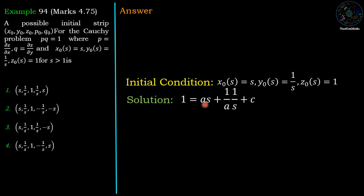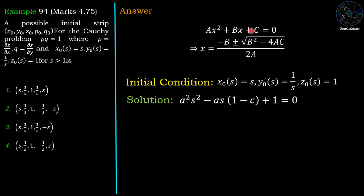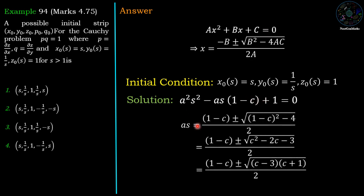To find the value of a, take c to the other side: 1 − c = as + 1/(as). Taking LCM as: as(1 − c) = a²s² + 1. Rearranging gives the quadratic equation: a²s² − as(1 − c) + 1 = 0. Recall the quadratic formula: x = [−b ± √(b² − 4ac)] / 2a.